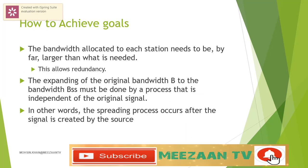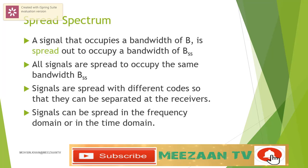Spread spectrum achieves its goals through two principles. One is that the bandwidth allocated to each station needs to be, by far, larger than what is needed — this allows redundancy. Second is that the expanding of the original bandwidth B to the bandwidth BSS must be done by a process that is independent of the original signal. In other words, the spreading process occurs after the signal is created by the source. If the required bandwidth for each station is B, spread spectrum expands it to BSS such that BSS is much greater than B. The expanded bandwidth allows the source to wrap its message in a protective envelope for a more secure transmission.